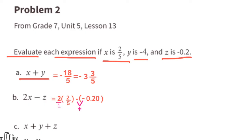Since 2 times 2/5 equals 4/5, we rewrite the expression as 4/5 plus 2 tenths. To add fifths and tenths, we find a common denominator. Multiplying 4/5 by 2 over 2 gives us 8/10. Now we have 8 tenths plus 2 tenths, and we can write them as decimals or fractions.